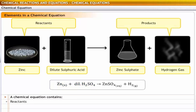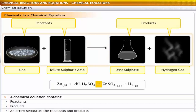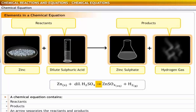The resulting substances, known as products, are on the right-hand side. For example, in the equation, zinc sulfate and hydrogen gas are the products. Hence, they are on the right. An arrow separates the reactants and the products and also indicates the direction of the reaction. Thus, in the reaction you saw, the arrow indicates that zinc and sulfuric acid react to form zinc sulfate and hydrogen.